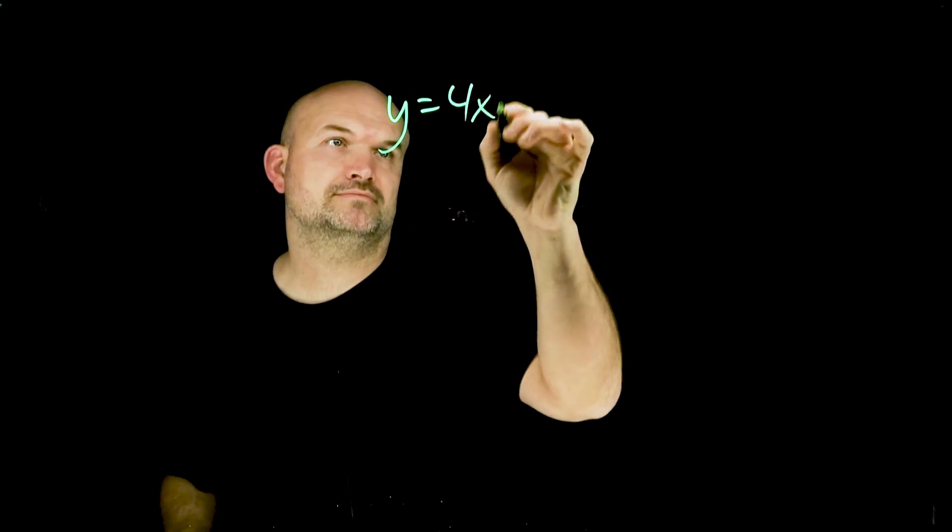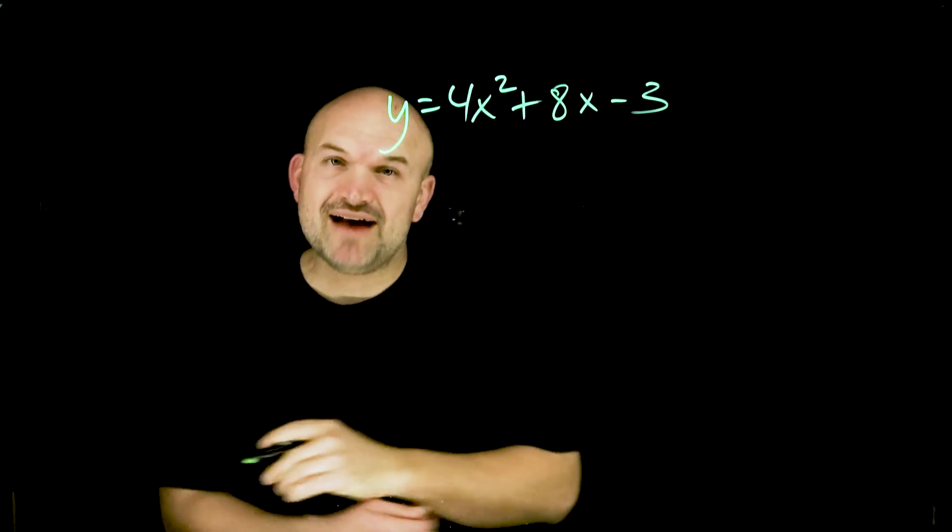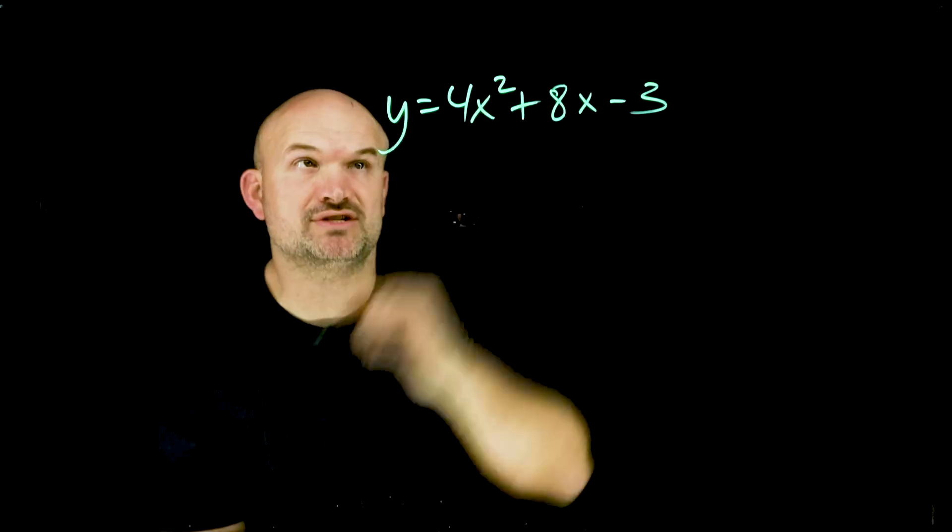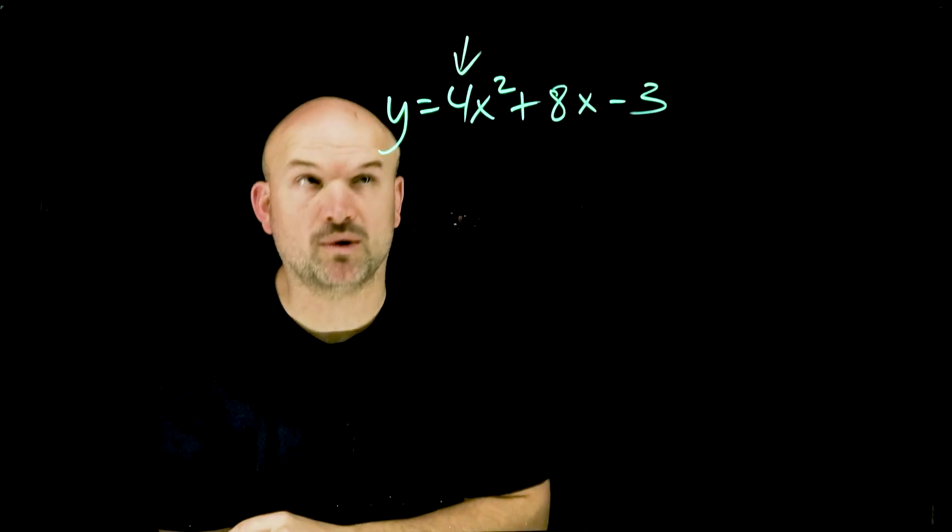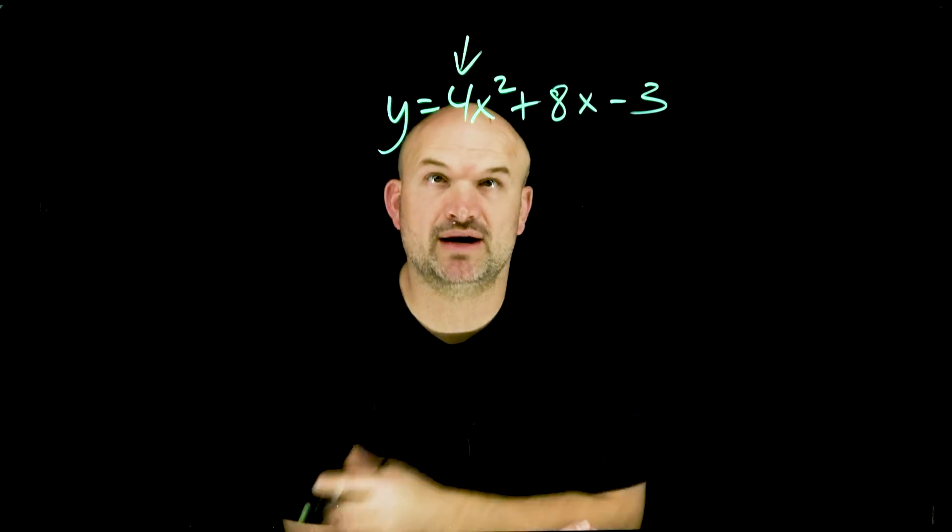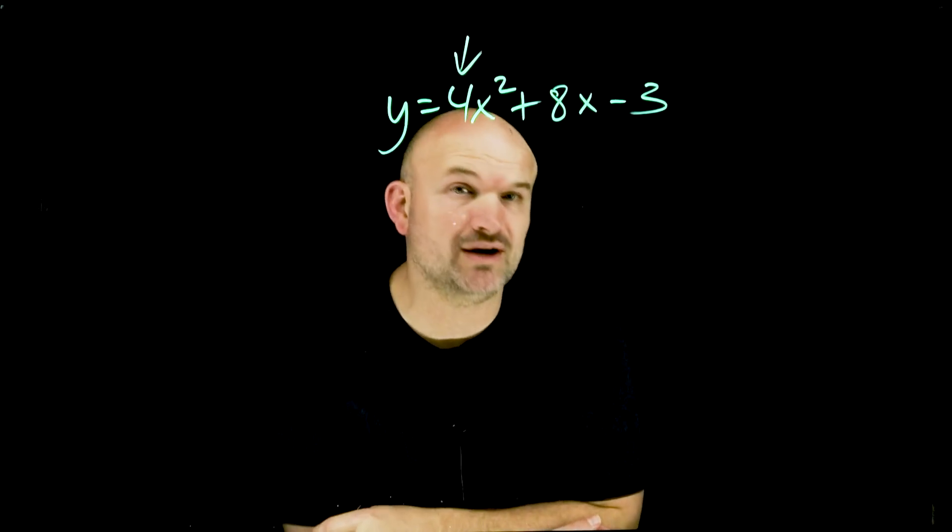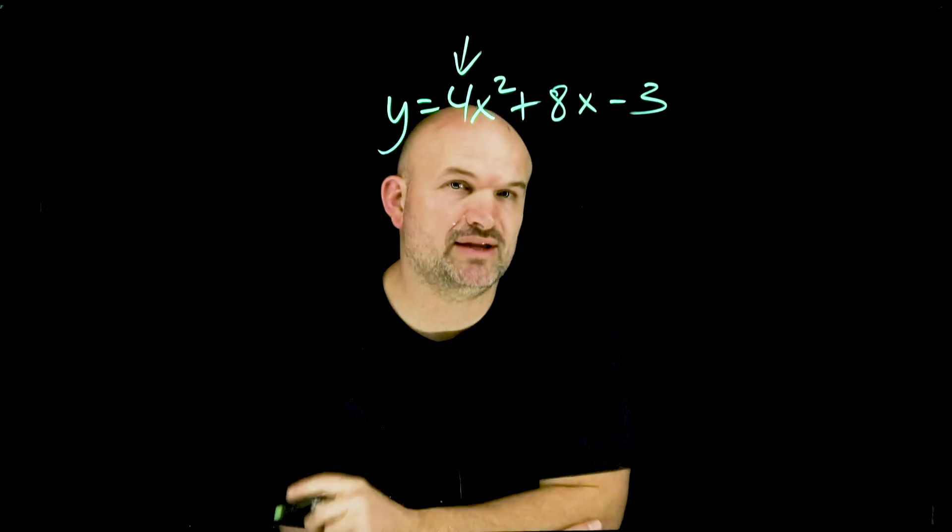So when you're completing the square and you have a problem that looks like this, we have an issue that we need to address first and that issue is this 4. Whenever we're applying completing the square, we can only apply it when our coefficient of x squared is equal to 1. So we need to get rid of that 4.